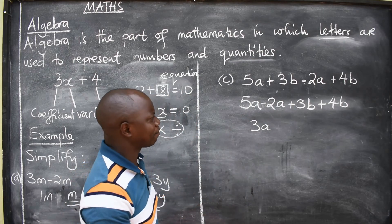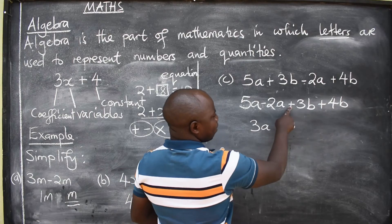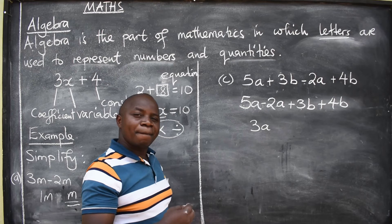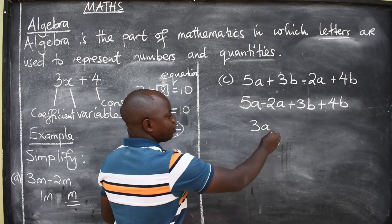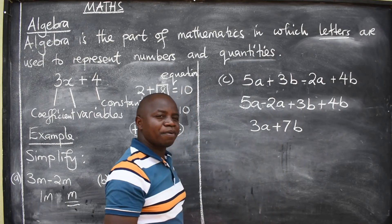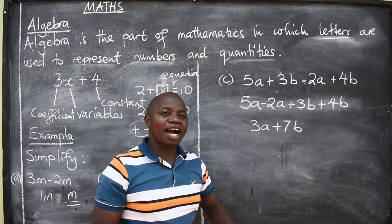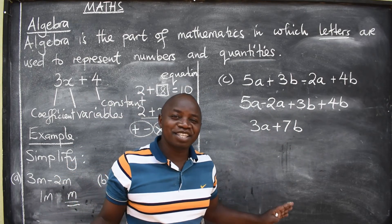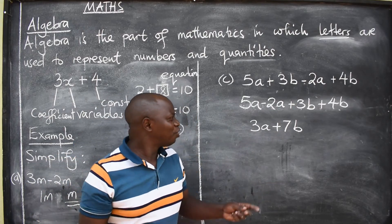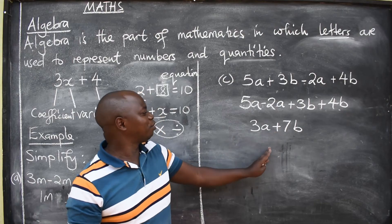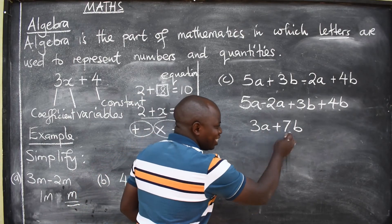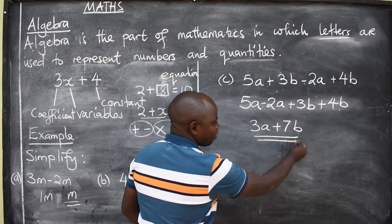On the other side here, I've got plus 3 plus 4, which is 7. I'll write plus 7, letter B, variable B. Can these two be added? Sometimes in the exam, you continue until you write 10AB. No. You can't add these. This is the final answer.